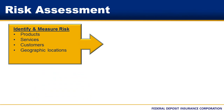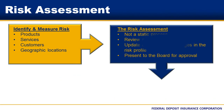The risk assessment should include all branches and operational areas. The same risk management principles that the bank uses in traditional operational areas should be applied to assessing and managing money laundering and terrorist financing risk. The bank's risk assessment is not intended to be a static process. As a matter of sound practice, a bank should review its risk assessment periodically and update it to account for any changes in the bank's risk profile.